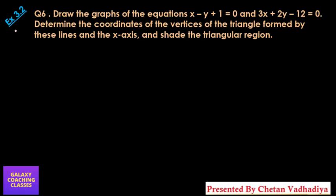Hello friends, my name is Chetan Vadhar and today we are going to solve CBSE class 10th math exercise 3.2 question number 6. Draw the graph of the equations x minus y plus 1 equals to 0 and 3x plus 2y minus 12 equals to 0. Determine the coordinates of the vertices of the triangle formed by these lines and the x-axis and shade the triangular region.